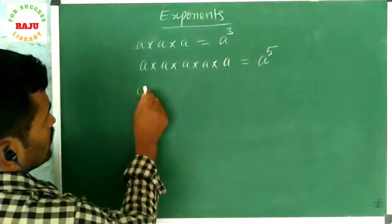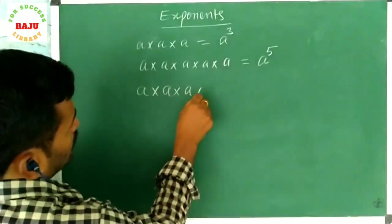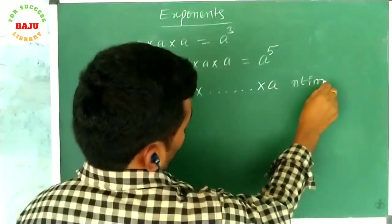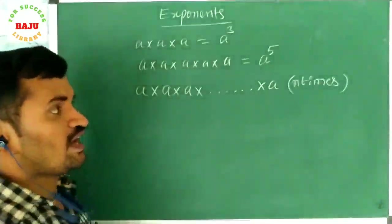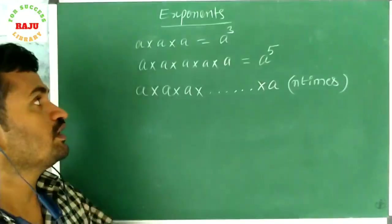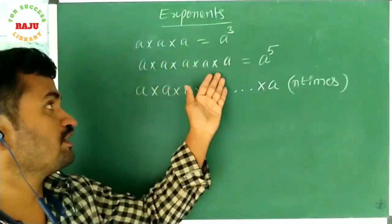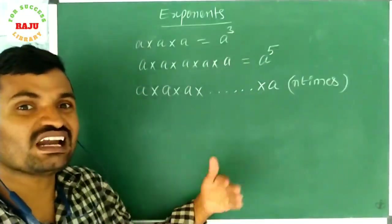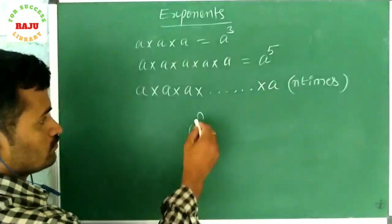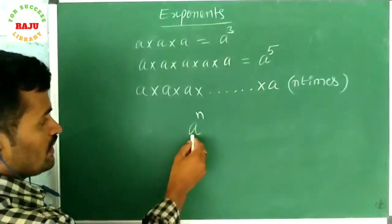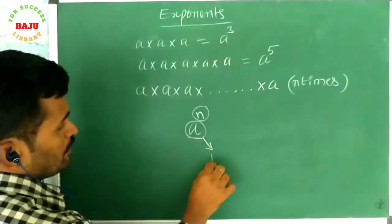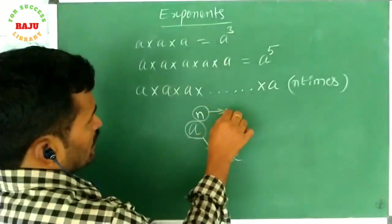If you write a into a into a and so on, n times — if you multiply a n times, how can we write it? If three times, a power three; if five times, a power five; so n times means we can write a power n. Here, a is called the base and n is called the exponent.